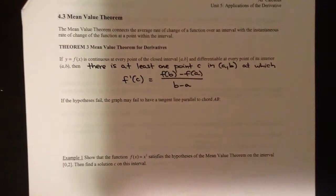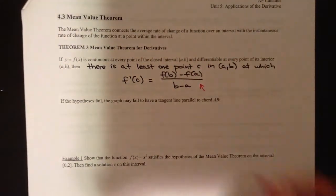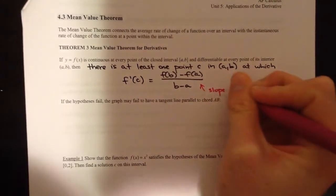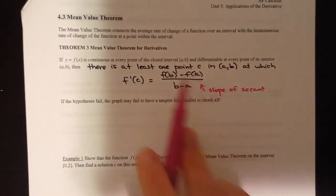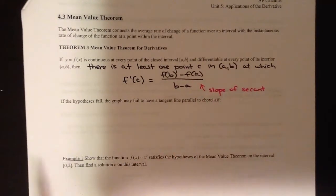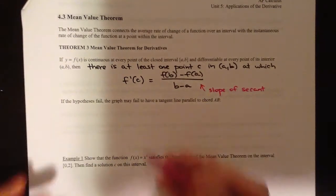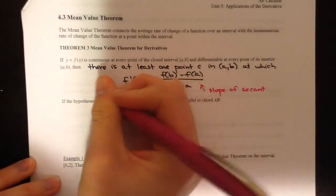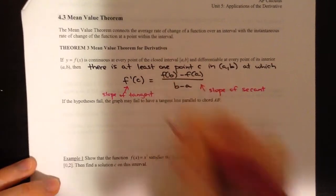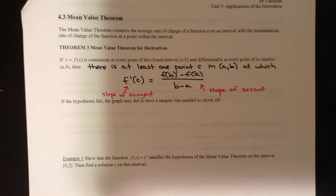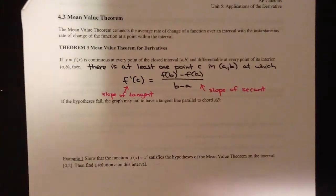f(B) minus f(A) over B minus A — I hope we recognize that as a slope formula. This represents the slope of the secant line from A to B, the endpoints of that interval. f′(C) represents the slope of a tangent line. So what this essentially says is that the slope of the secant line is going to be the same as the slope of one particular tangent line that we can find on that interval.